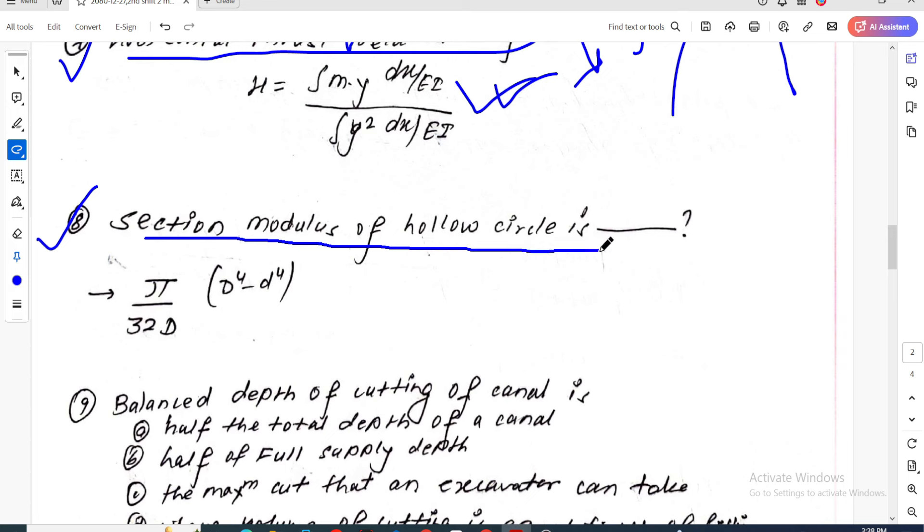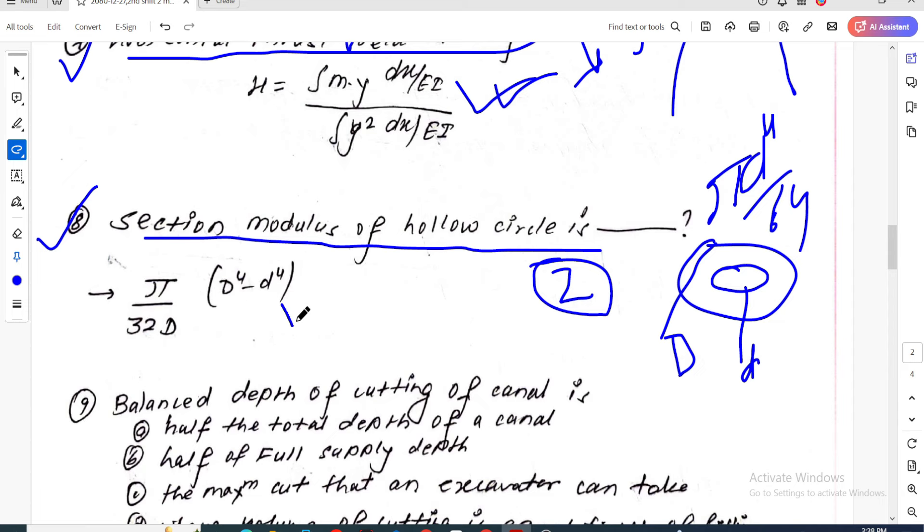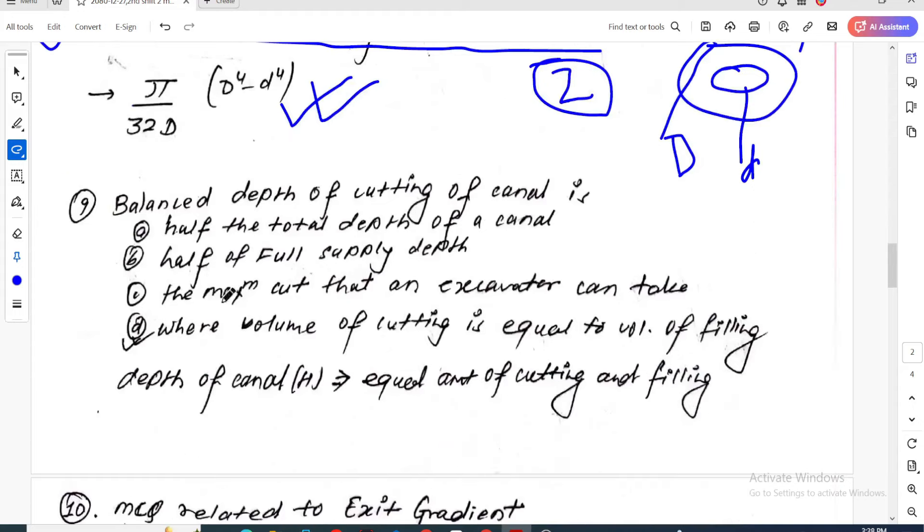Question eight about section modulus for a hollow circle. For a solid circle, it's π times d to the power 4 divided by 64. For a hollow circle, the formula is π divided by 32 times capital D to the power 4 minus small d to the power 4.